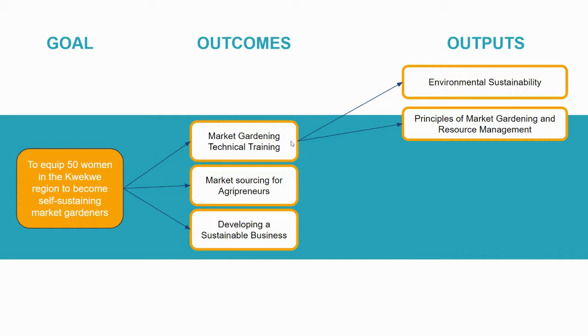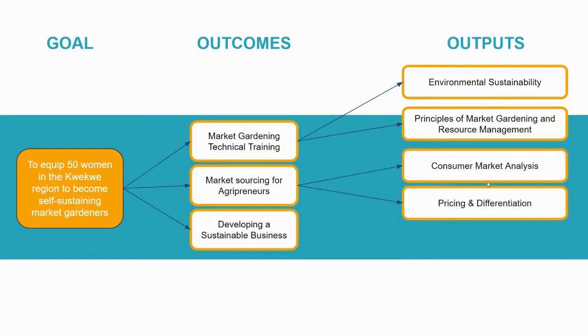This could be a training all on its own that's not necessarily set to achieve the goal that we have. And so that's why we consider outputs less direct when related to your goal. Let's go to our market sourcing for agripreneurs. That could result in a consumer market analysis. It could also result in pricing and differentiation, all in an effort to equip our agripreneurs.